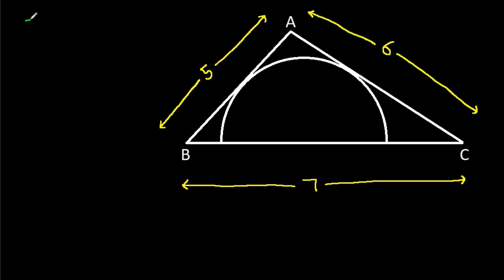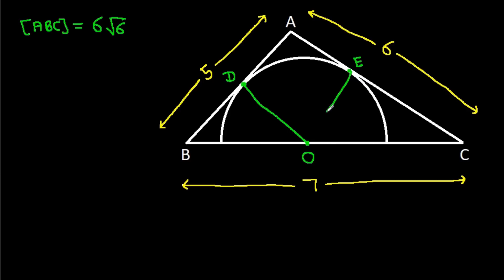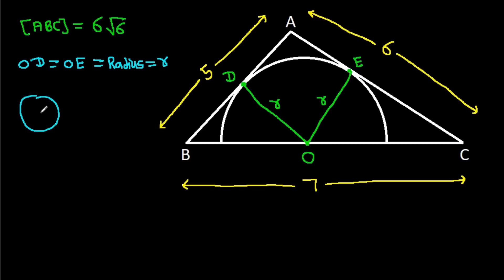Now, we have the area of ABC equal to 6 root 6. Suppose the center of the semicircle is O, and the points where the semicircle touches the sides are D and E. Then OD equals OE, which is the radius R. In any circle, the radius and tangent are perpendicular to each other, so these angles are 90 degrees.